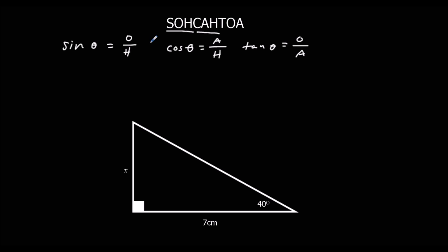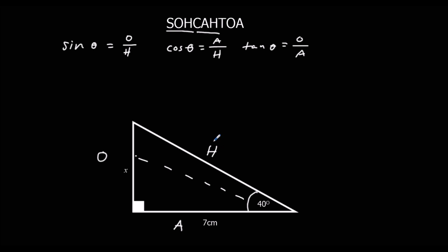Let's look at labelling the sides now, so you'll find out what O, A, and H are. The longest side in the triangle is called the hypotenuse — that's H, the one opposite the right angle. The side opposite the angle we're looking at is called O. And the one in between the angle and the right angle is called A — the adjacent.